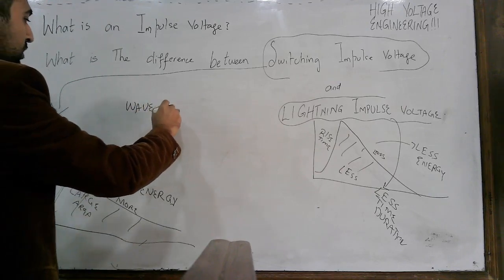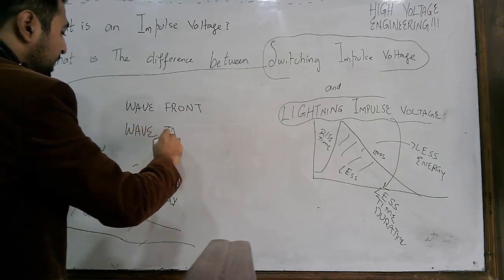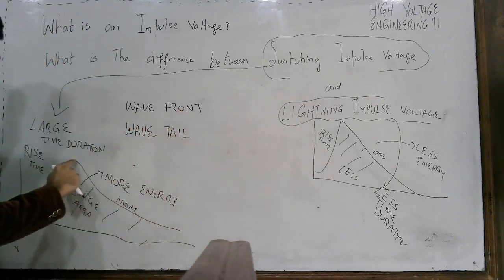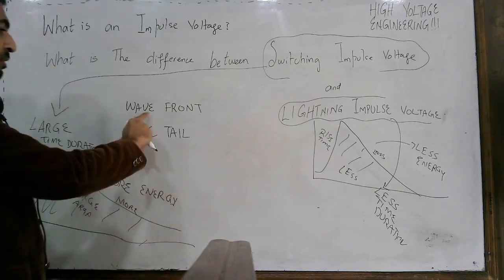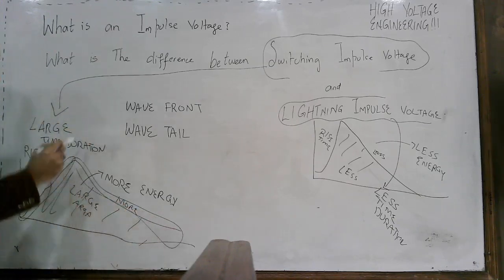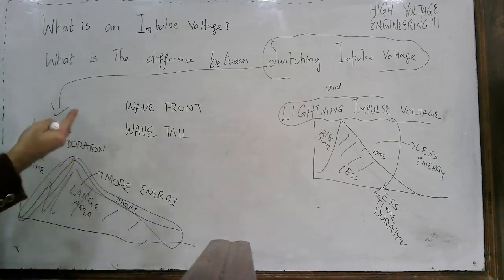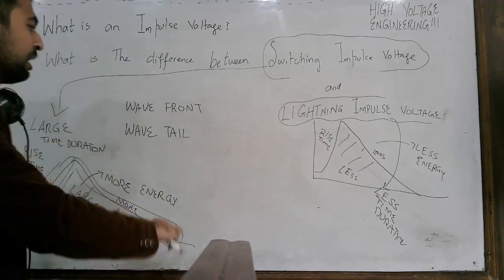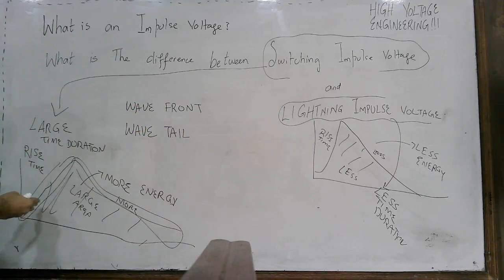We have two other common terms in the literature: wave front and wave tail. The wave tail is associated with the waveform from its peak to the minimum value, and the wave front is associated with the waveform from zero to the peak value. The wave front time is the time required for the impulse waveform to rise from zero to its peak value, and the wave tail time is the time required to fall from the peak value to its minimum value.